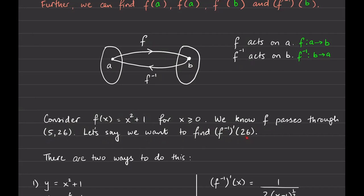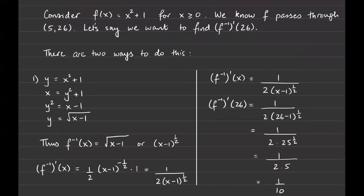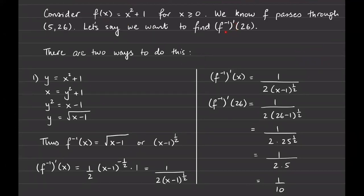There are two ways to do it — I'll do the long way first. If we are given f(x) and want the derivative of the inverse, maybe we first just find the inverse itself. The standard procedure: swap f(x) for y, so y = x² + 1; then swap x and y to get x = y² + 1; subtract 1 to get y² = x − 1; take the square root to get y = √(x − 1). It can't be plus or minus because we restricted the domain. So f⁻¹(x) = (x − 1)^(1/2).